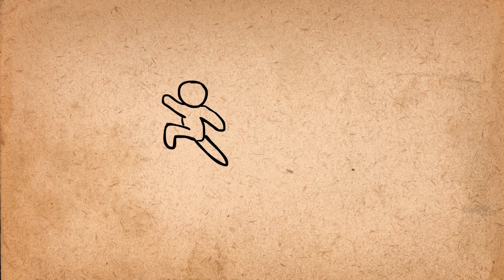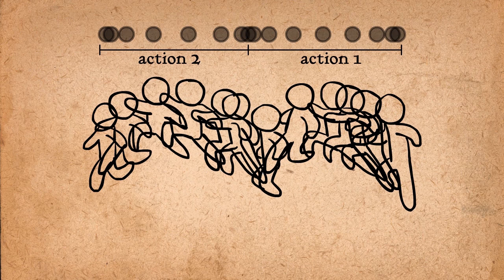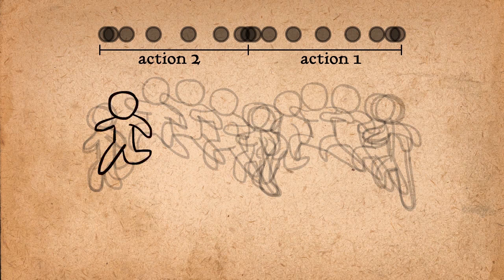A good way to fix a choppy animation is to analyze the space between the drawings. They should be evenly spaced, with drawings closer together at the beginning of the action and at the end of the action, and drawings farther apart in the middle.